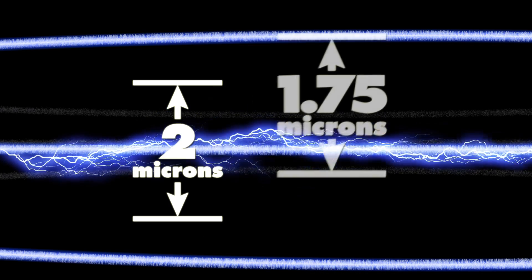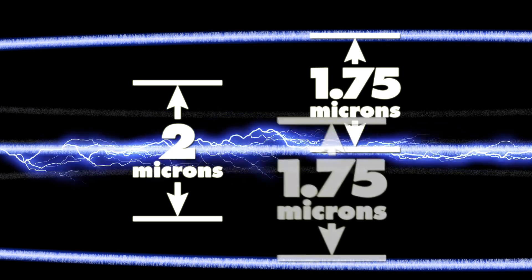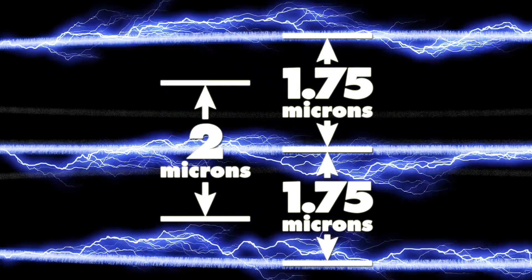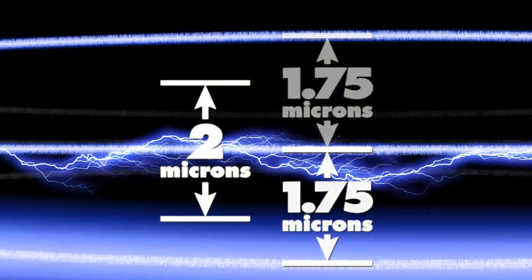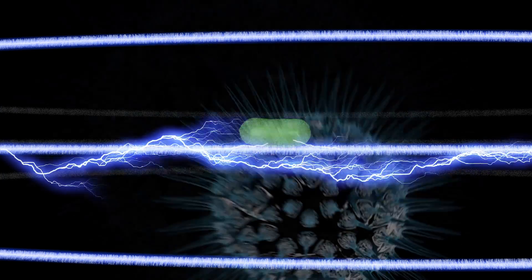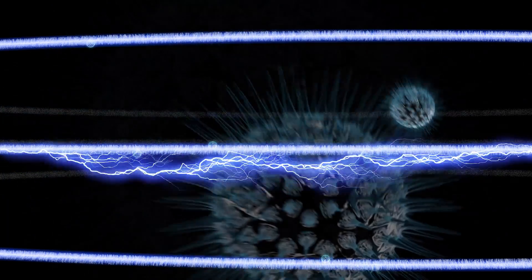Each ultraceram fiber generates a 1 micron electropositive field in every direction, creating a 2 micron coverage area. And yet, the fibers are spaced only 1.75 microns apart.